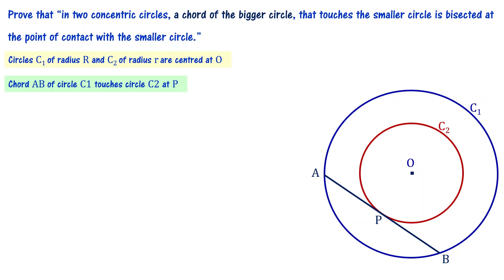Let's start with this now. C1 is the circle of radius capital R and small circle C2 has radius small r. They are centered at O. That's why these two are concentric circles.